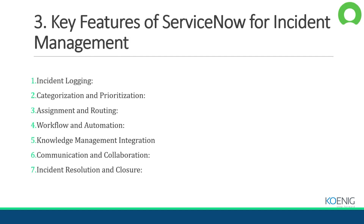Next we have Categorization and Prioritization. Incidents are categorized based on predefined criteria. For example, an Outlook issue is related to software, so it will be categorized under software and automatically assigned to the software team. Prioritization means if an incident is very crucial and the priority is high, you have to provide a solution as soon as possible for that particular incident.